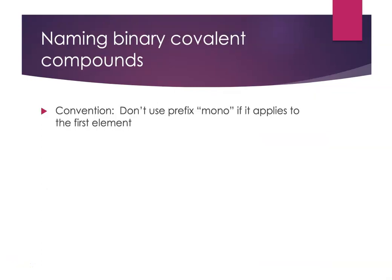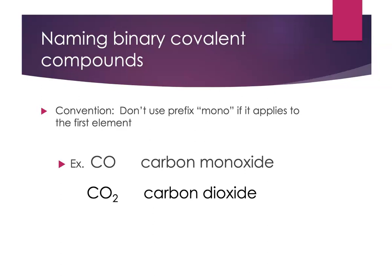There is one little quirk to this system. If the prefix mono would apply to the first element, we don't use it. For example, when we're looking at CO, the name of the compound is carbon monoxide. There's one carbon and one oxygen, but we don't say monocarbon — it's carbon monoxide. Similarly, CO2 is carbon dioxide. And that's really the whole system right there.